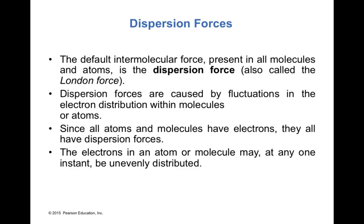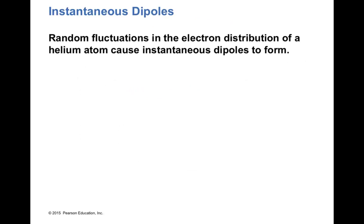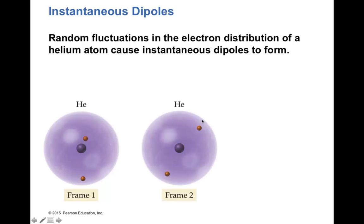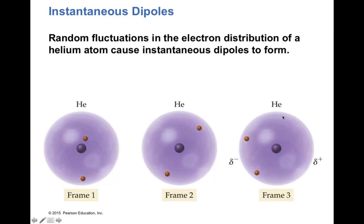The electrons in an atom or molecule may at any instant be unevenly distributed, inducing instantaneous dipoles. Random fluctuations in the electron distribution of a helium atom cause instantaneous dipoles to form. Think of it like a movie: in frame one the nucleus is in the middle with two electrons around it; in frame two the electrons are distributed differently; in frame three both electrons are close together in the same region, inducing a dipole.